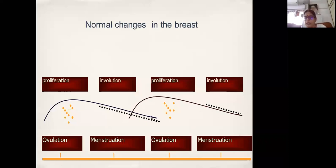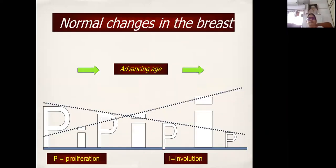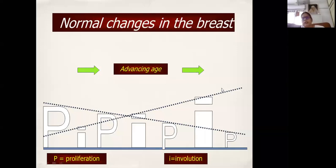With advancing age, in the 20s and 30s, the proliferative component is more prominent. As age advances, you see less proliferation but more involution. More and more TDLUs involute and the fibroglandular breast tissue gets replaced by fat.